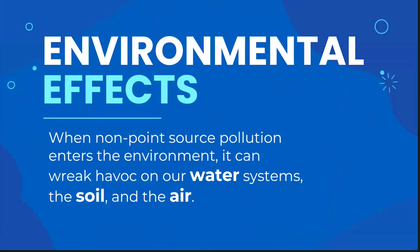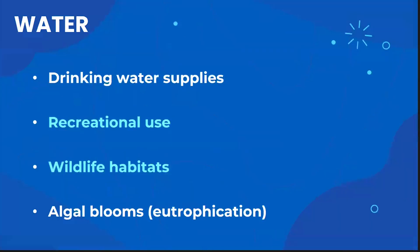Environmental effects. Non-point pollution, just like any other kind of pollution, can harm the environment. It can wreak havoc on our water systems, the soil, and the air. There are many possible effects on water systems, but here are just a few. Non-point source pollution can affect drinking water supplies, recreational use like swimming and boating, wildlife habitats especially aquatic ones, and it can create algal blooms, which can lead to eutrophication.